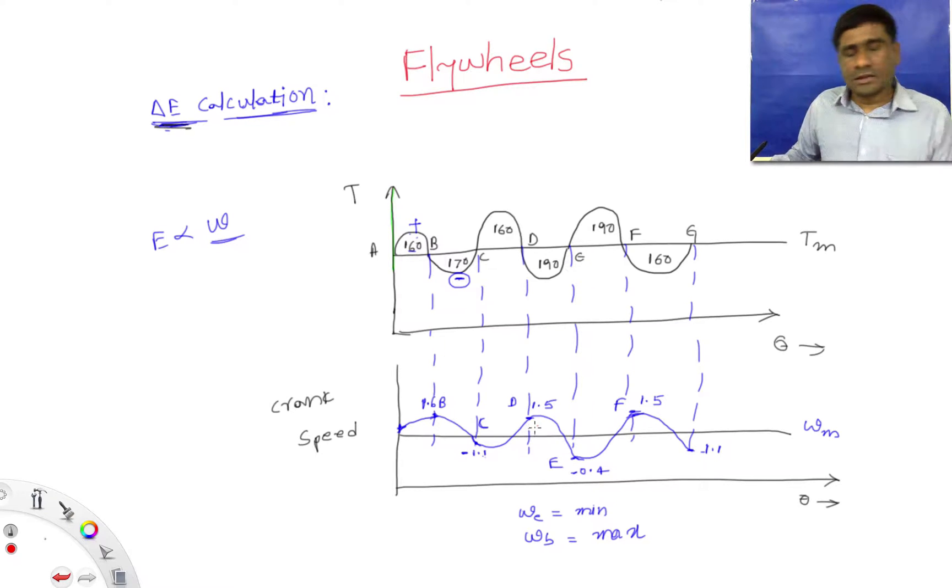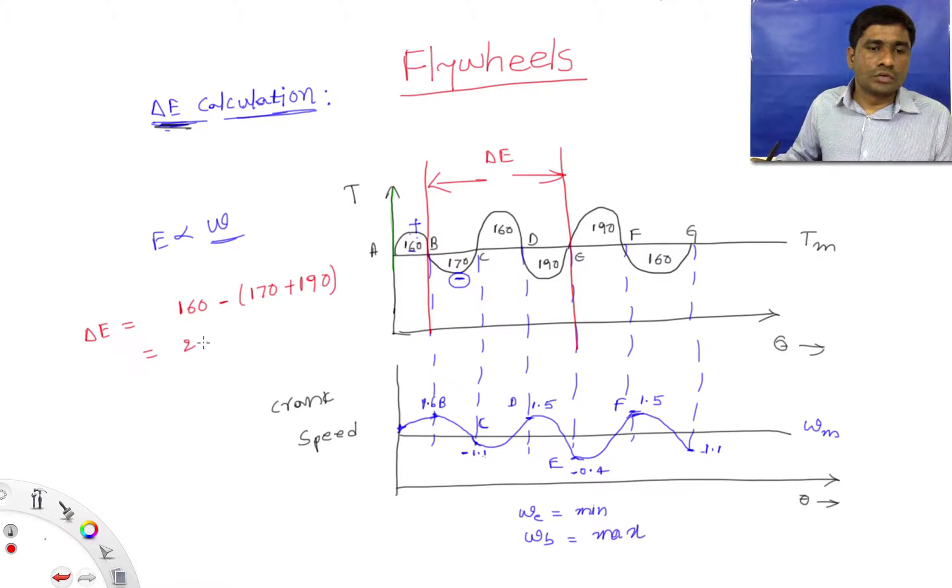Because delta E is E1 minus E2. E1 is energy corresponding to the maximum angular velocity, and E2 is energy corresponding to the minimum angular velocity. If you draw this, this is the area. So area between these two is delta E between point B and E. That is 160 minus 170 minus 190 plus 190, which is 200 with negative sign. So maximum fluctuation of energy is 200.